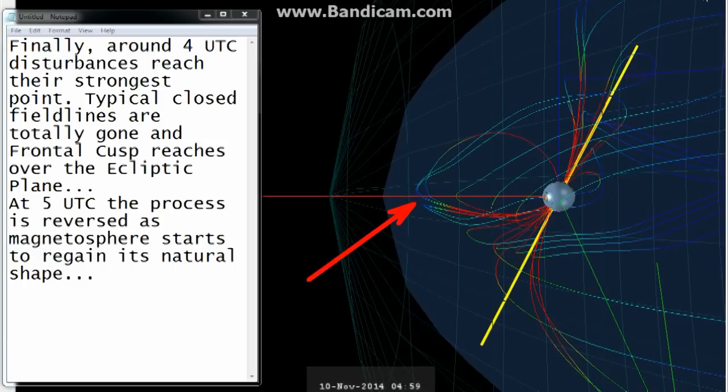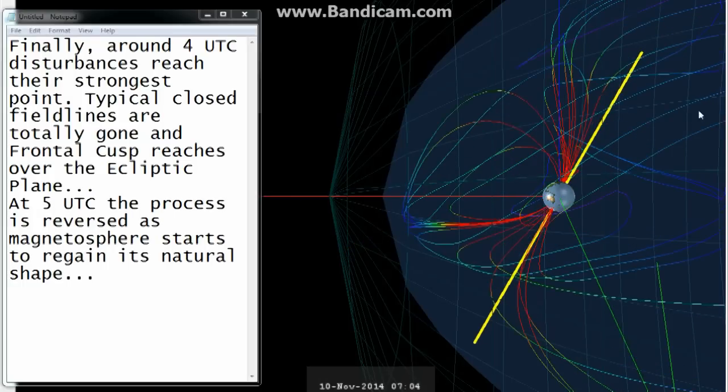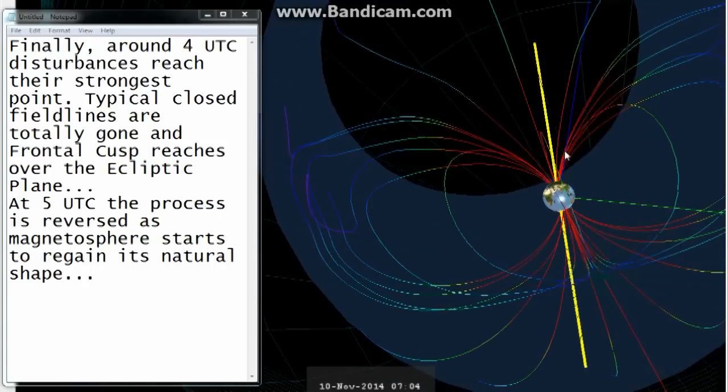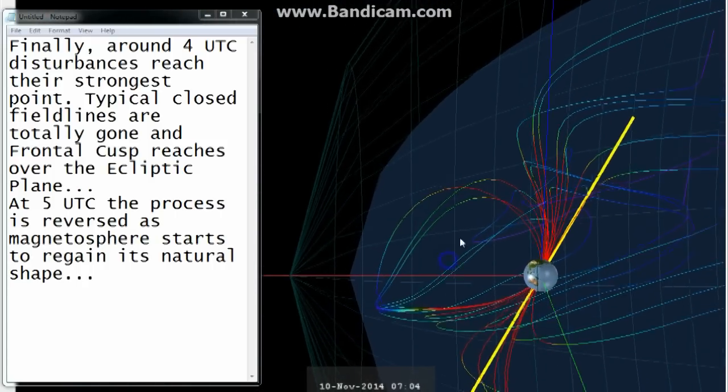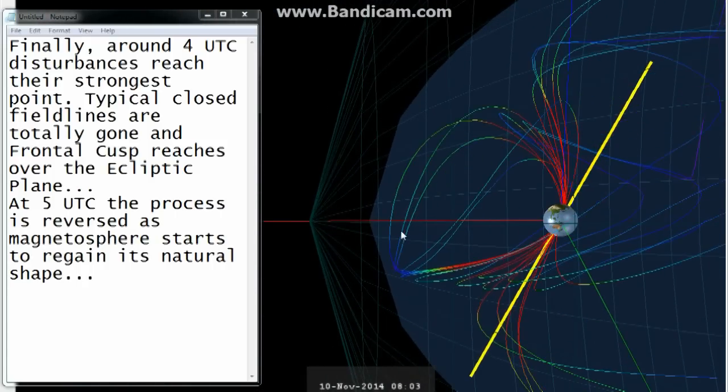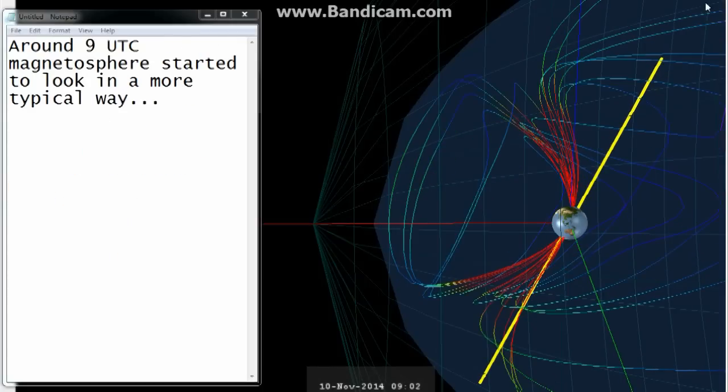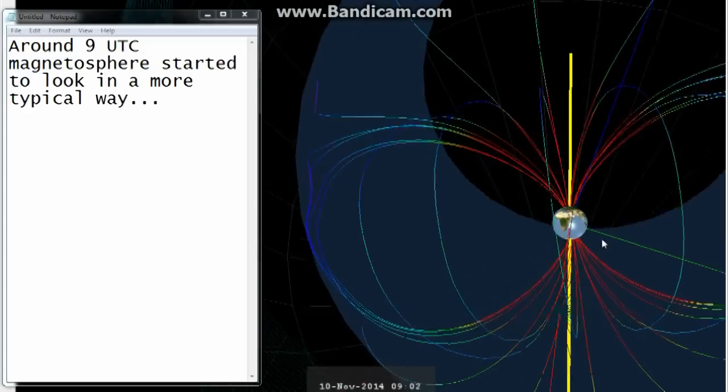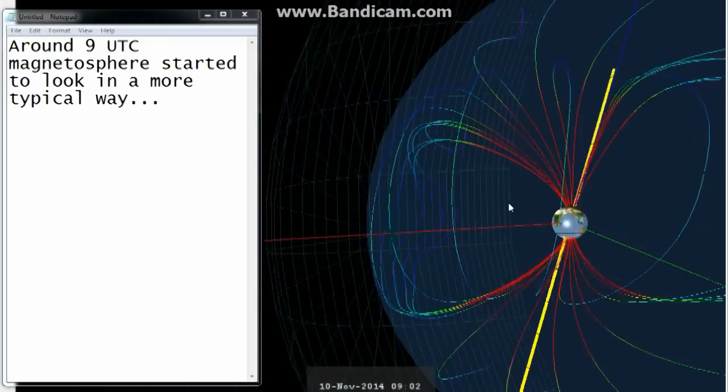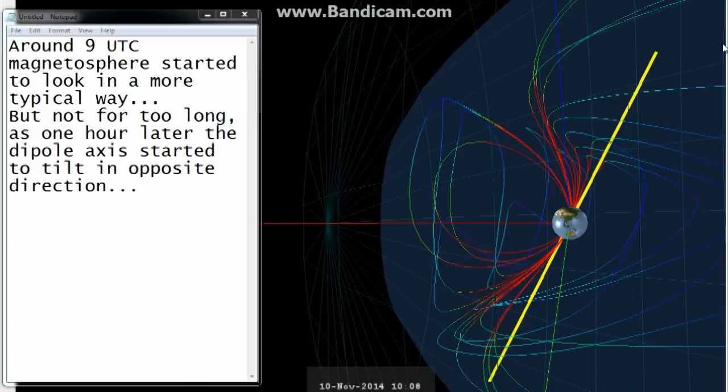At 5 UTC the process is reversed as the magnetosphere starts to regain its natural shape. Around 9 UTC the magnetosphere starts to look in a more typical way, but not for too long. As one hour later the dipole axis started to tilt in the opposite direction.